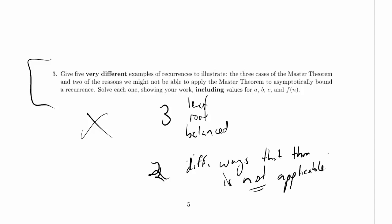And you know, what's an example of a way that the theorem is not applicable? Well, for instance, one way that the theorem might not be applicable is, here's a nice one: T of n equals n. Well, that's kind of a trivial recurrence because it's not recursive, and the master theorem is not applicable because it's not recursive.